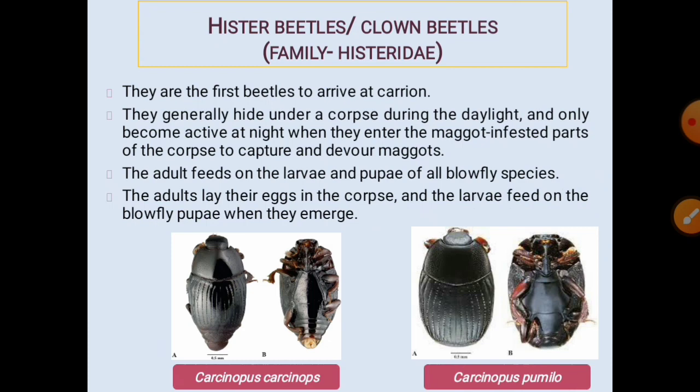Hister beetles or clown beetles from the family Histeridae, order Coleoptera: they are the first beetles to arrive at carrion. They generally hide under a corpse during daylight and only become active at night. They enter the maggot-infested parts of the corpse to capture and feed on the maggots. The adults feed on the larvae and pupae of all blow fly species, and their own larvae feed on blow fly pupae when they emerge.